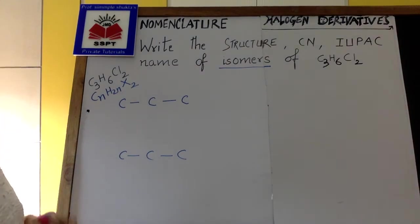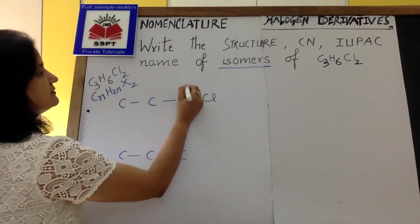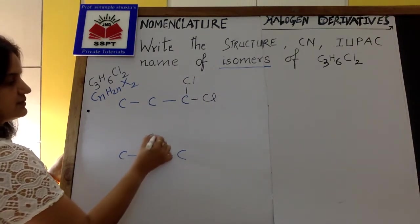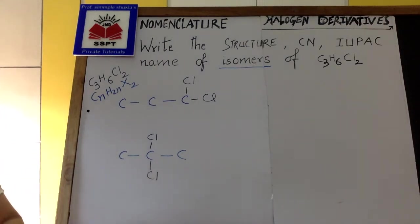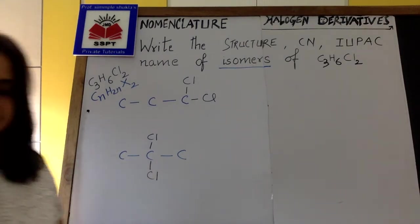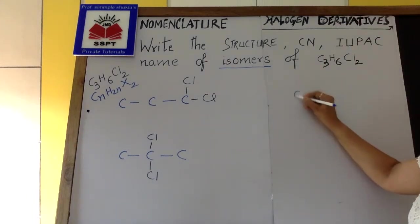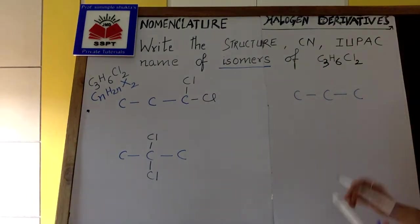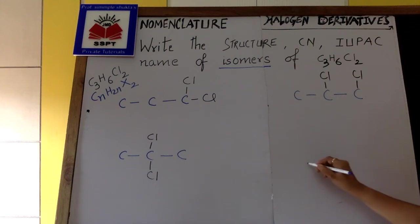I can now write two halogens on the same carbon like this. I can also write on the same carbon over here. I can take the three carbons and write the two halogens adjacent.